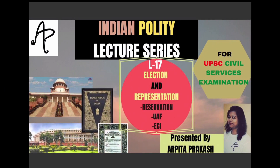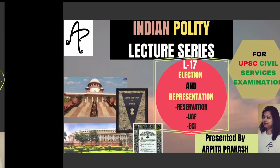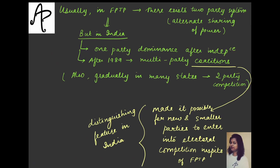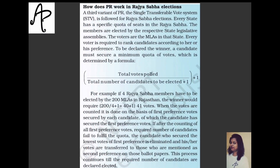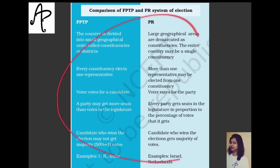That was all about FPTP and proportional representation. In the next video I will continue talking about other aspects of election and representation — reservation, universal adult franchise, and the Election Commission of India. Please focus on the comparison table given here; it should be clearly understood and memorized so you can answer any kind of question.